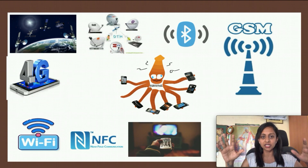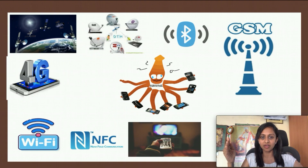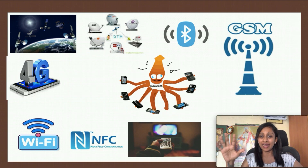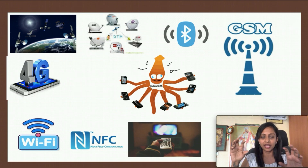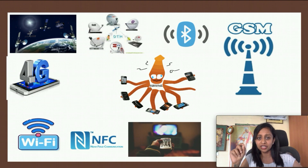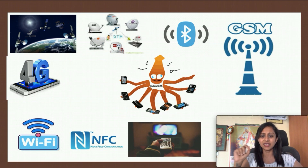Assume all these communications are happening at one particular place, and each of these communications needs an antenna. Any kind of communication wherein I need to throw energy into free space needs an antenna. I have given 8 such examples, so probably 8 such antennas are there in one place. Assume all are happening at the same time — how does one particular antenna know that it needs to take that signal itself?